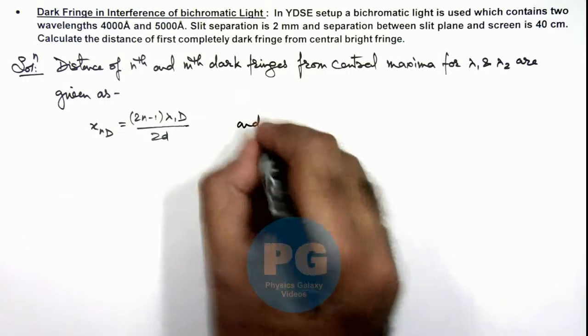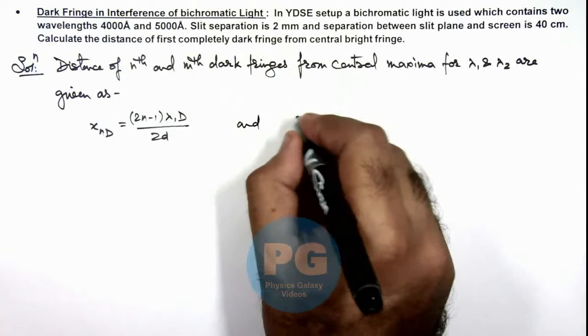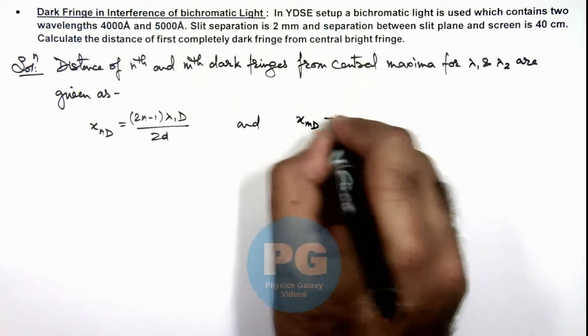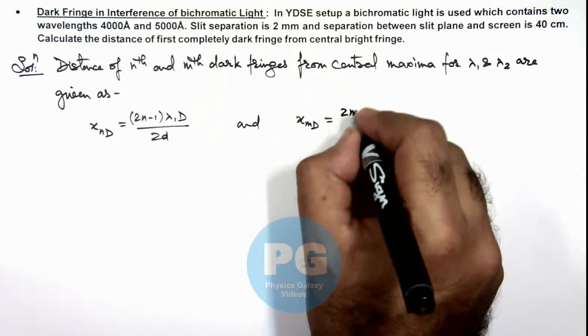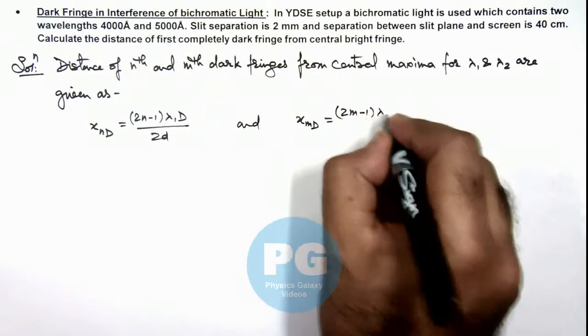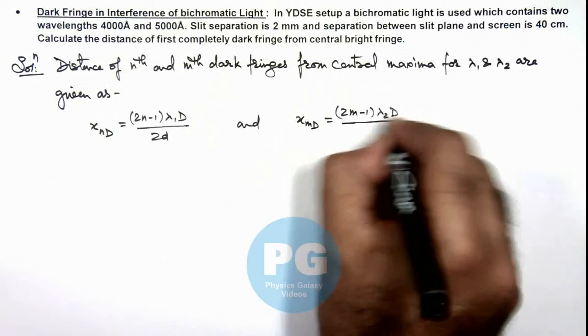And for the second wavelength, we write xₘ = (2m-1)λ₂D/2d, the distance of the mth dark fringe for the second wavelength.